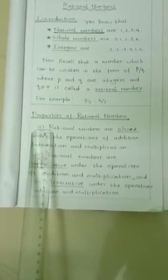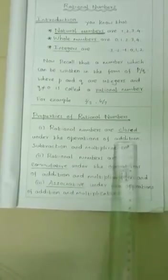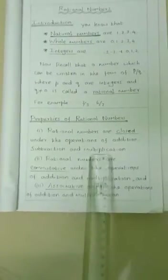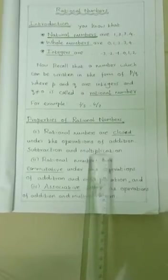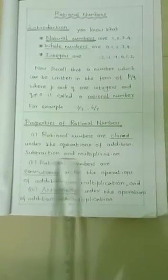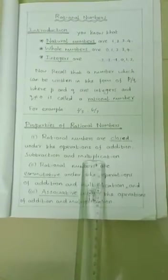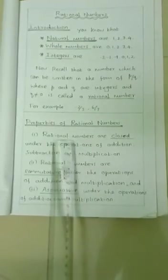The first property: rational numbers are closed under the operations of addition, subtraction, and multiplication.